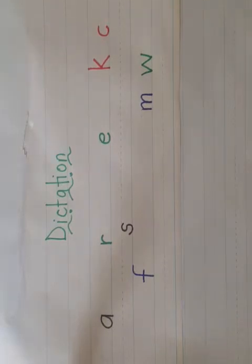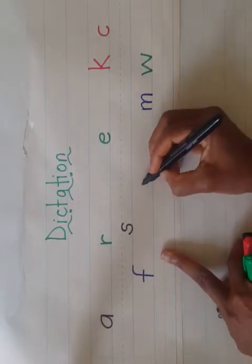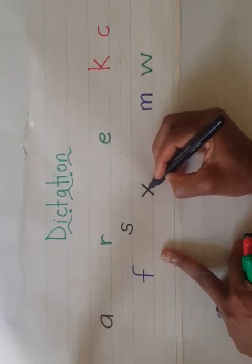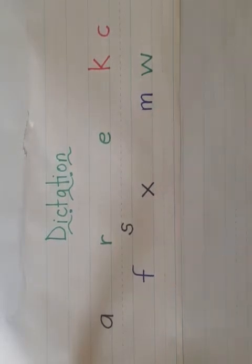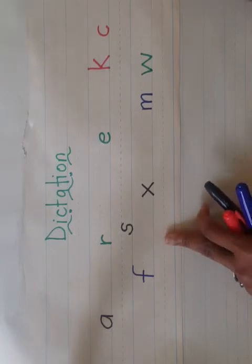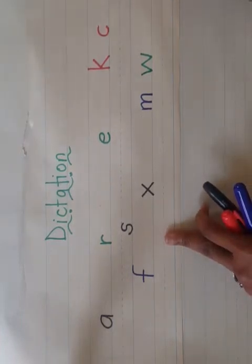What letter makes the 'ks' sound? Yes, X — X makes the 'ks' sound. This is how we write it: two diagonal lines crossing each other — that's the X. What letter makes the 't' sound, as in tap? T as in take — yes, the letter T. You go from the top straight down and across in the middle — that's a T.